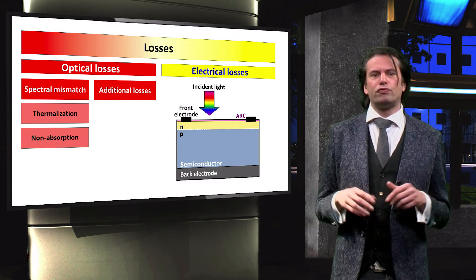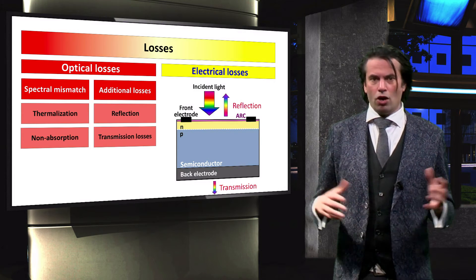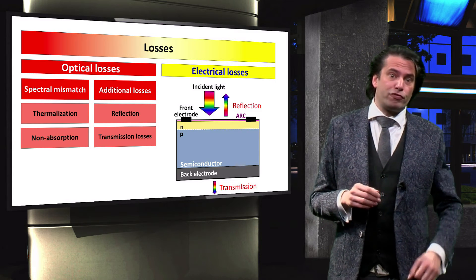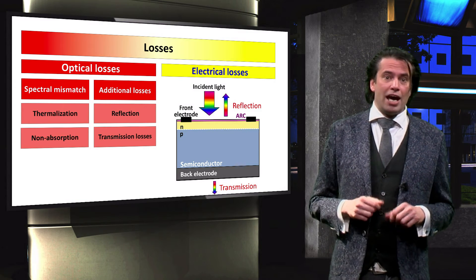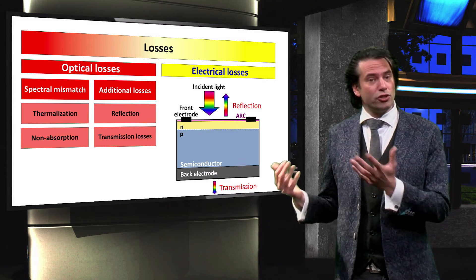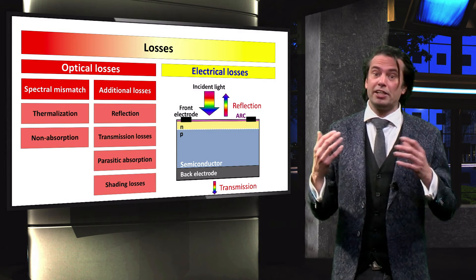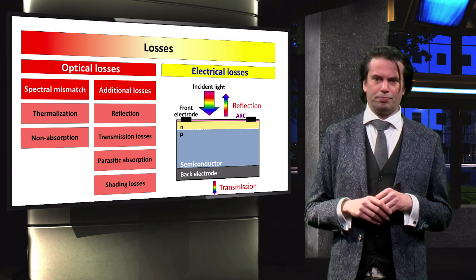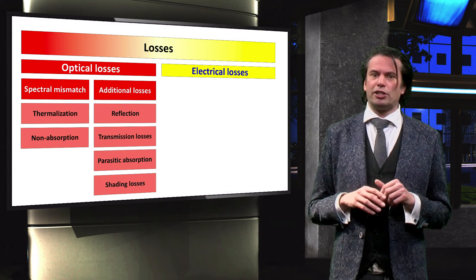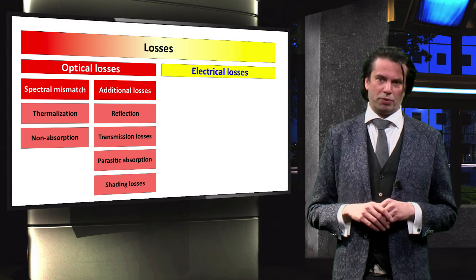Additional losses further limit the optical performance of a solar cell. Among these are the reflection of light from the front surface and the transmission of light that is not absorbed. Additionally, we learn about parasitic absorption and shading losses. These additional optical losses and spectral mismatch losses together make up the optical losses.